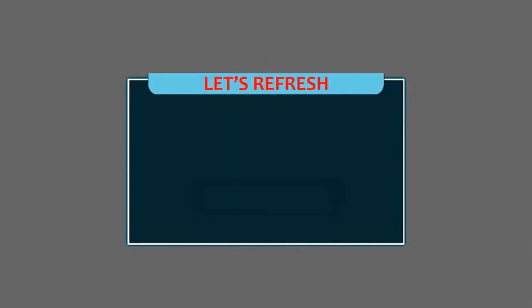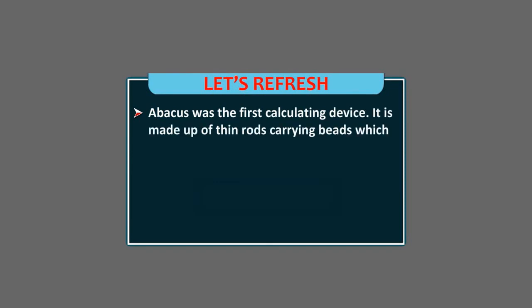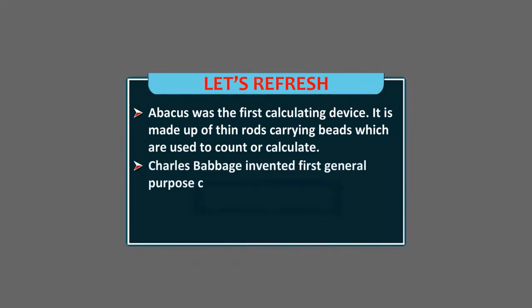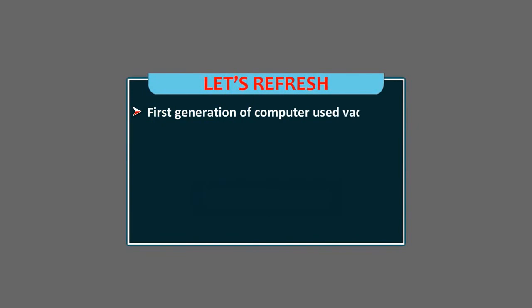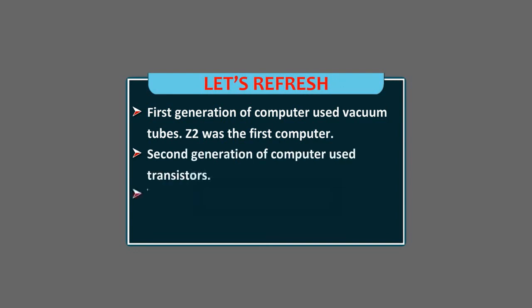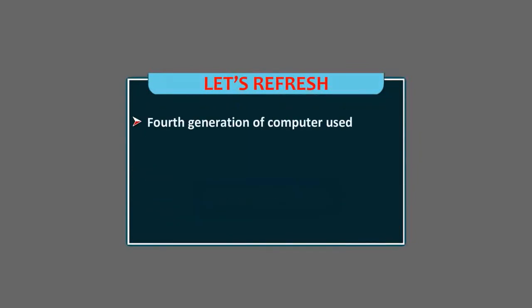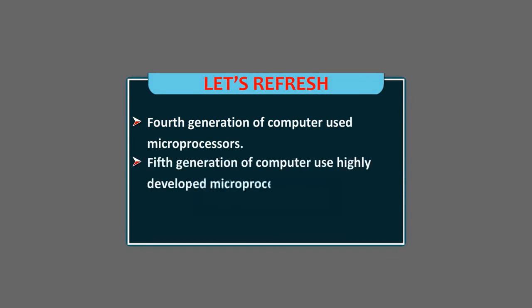Let's refresh. Abacus was the first calculating device. It is made up of thin rods carrying beads which are used to count or calculate. Charles Babbage invented first general purpose computer called the analytical engine. There are five generations of computer. First generation of computer used vacuum tubes. Z2 was the first computer. Second generation of computer used transistors. Third generation of computers used integrated circuits. Fourth generation of computer used microprocessors. Fifth generation of computers used highly developed microprocessors.